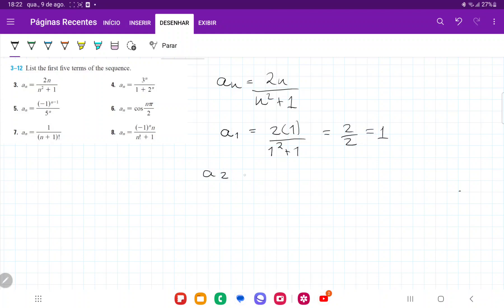For a2, we are going to have 2 times 2 over 2 squared plus 1, and so that is going to give us 4 fifths.